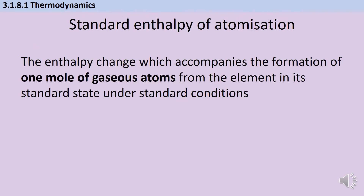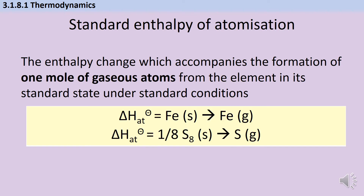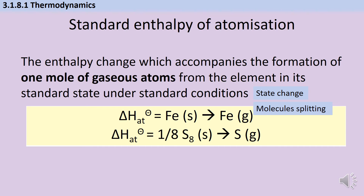Our second new enthalpy for year 13 is the standard enthalpy of atomization: the enthalpy change when we make one mole of gaseous atoms from an element in its standard state. For a metal, we're looking at a state change from one mole of solid atoms to one mole of gaseous atoms. For a molecular substance, the molecule needs to break apart. You must remember that atomization involves making one mole of gaseous atoms regardless of how many moles of molecules you start with — so for a sulfur molecule with eight atoms, you only need one-eighth of a mole of sulfur molecules.